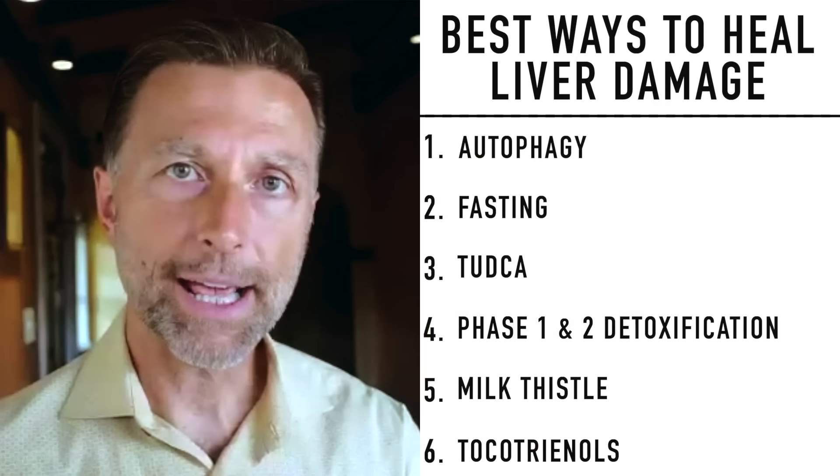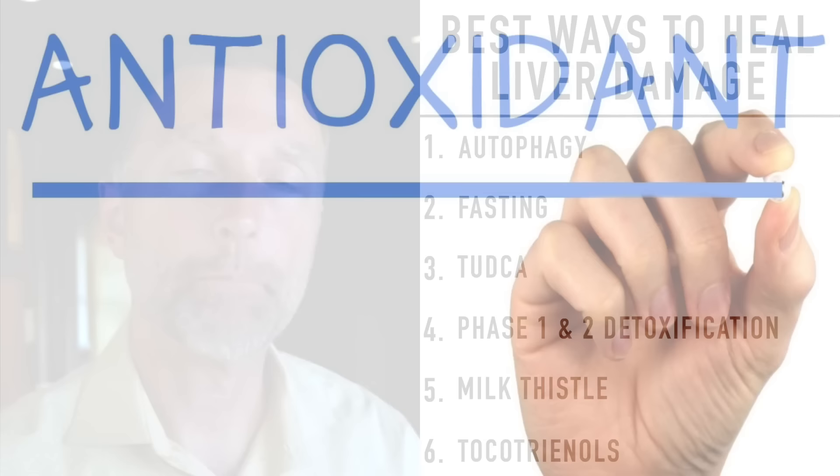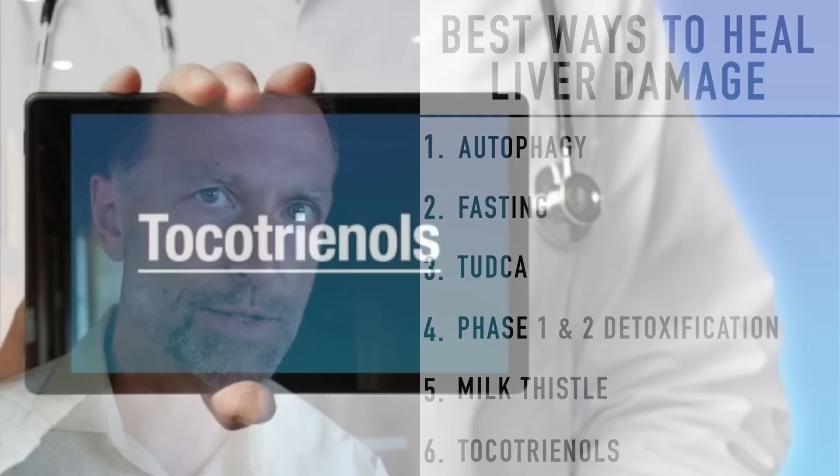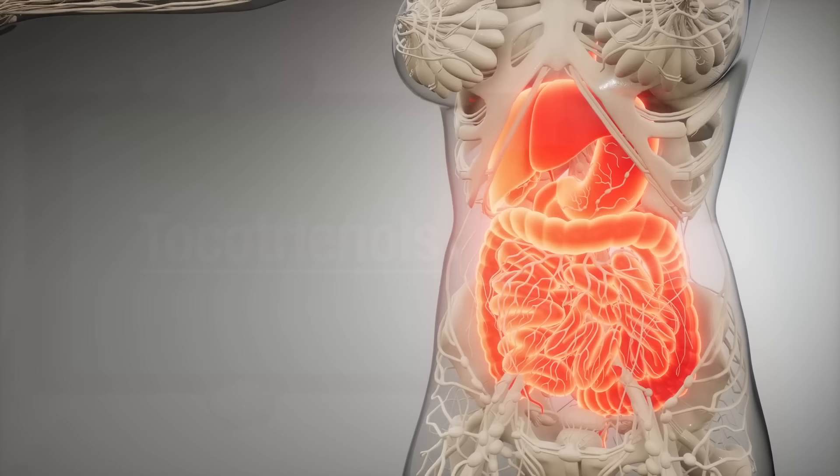Also, it's a very powerful antioxidant to protect against free radical damage, inflammation, and the things that lead to fibrosis. So the two things that tocotrienols will do is decrease inflammation and decrease the risk of fibrosis.